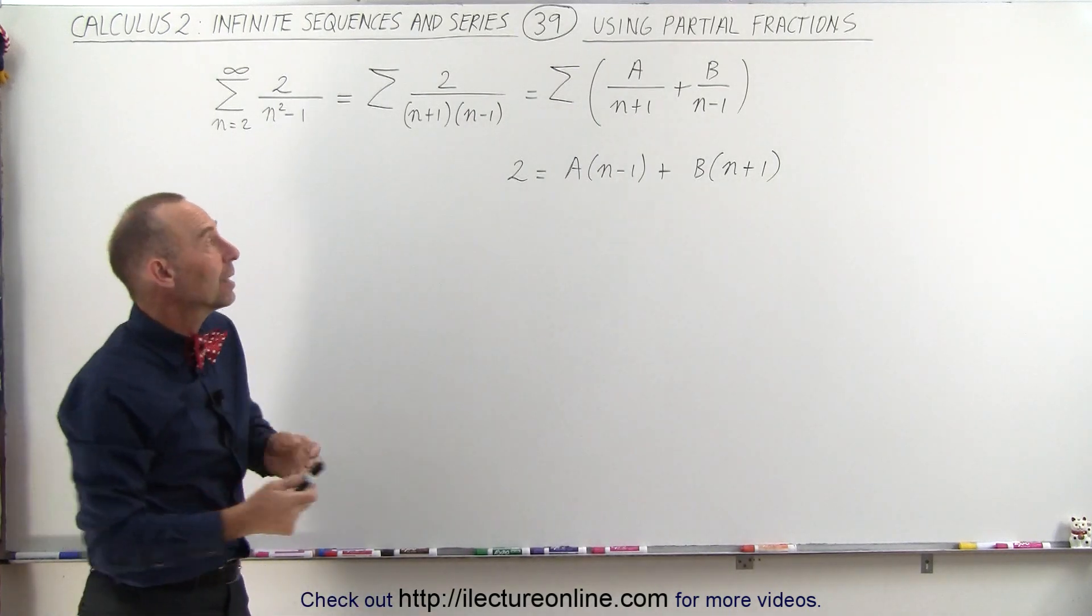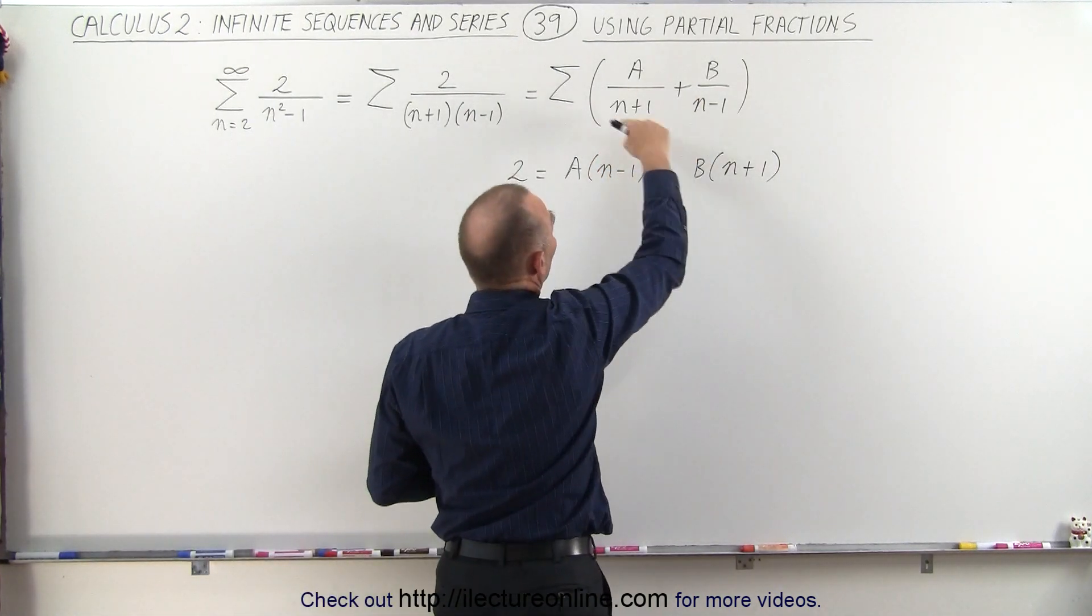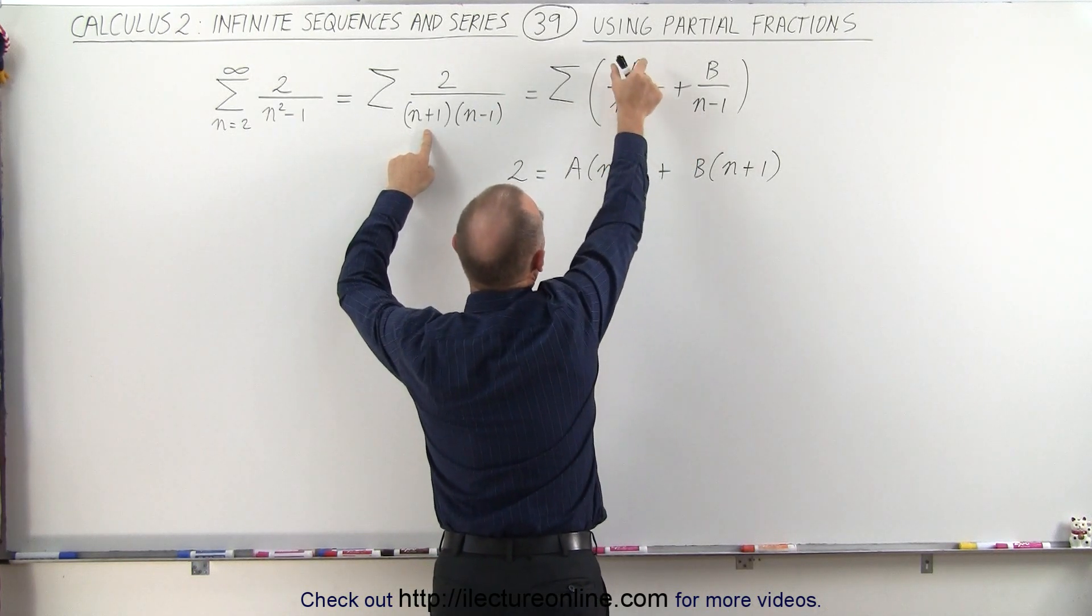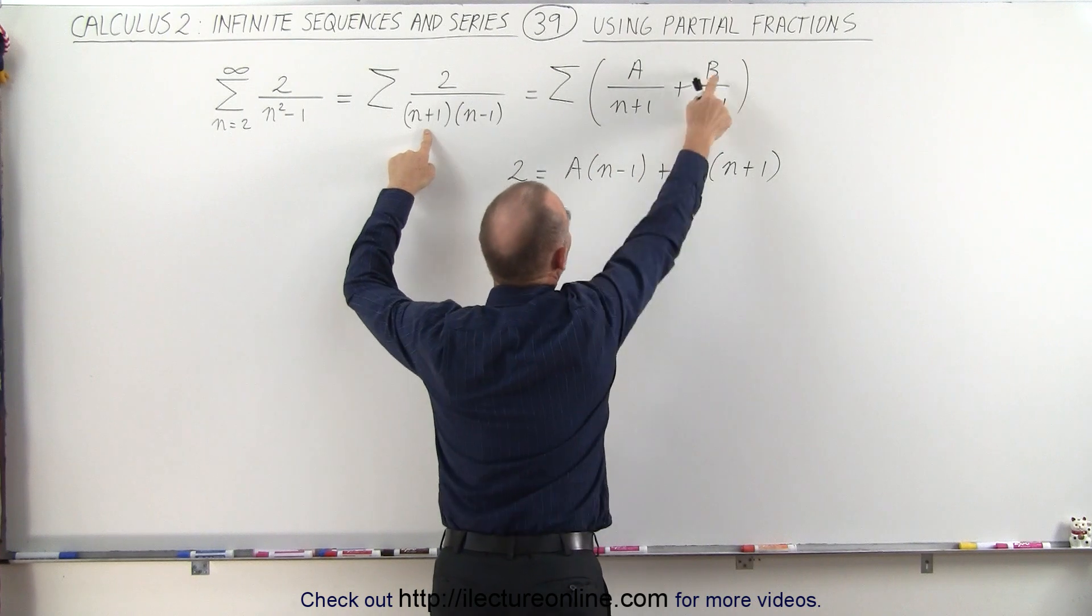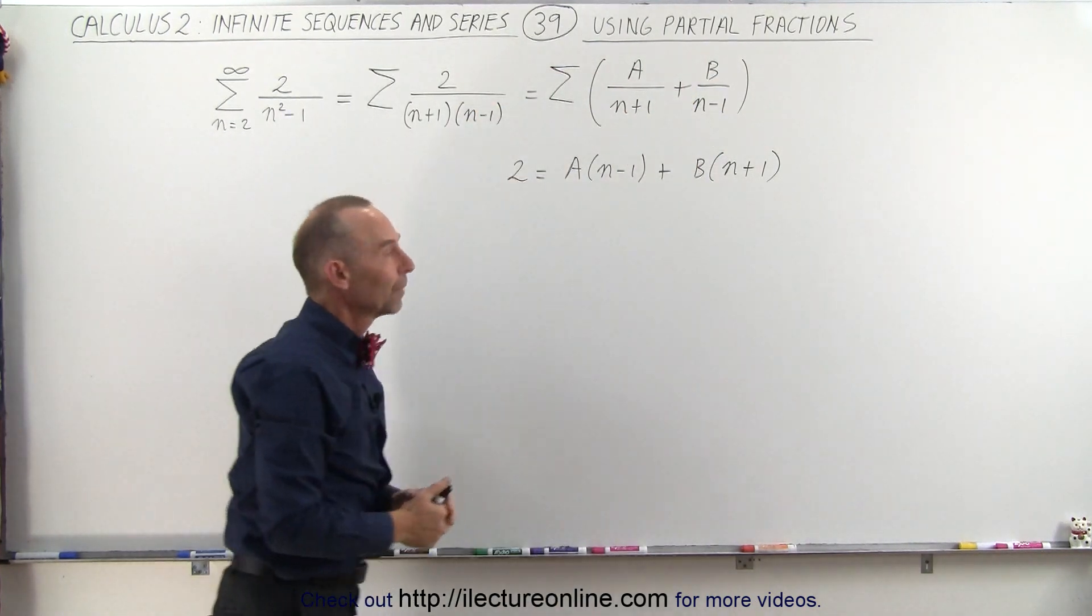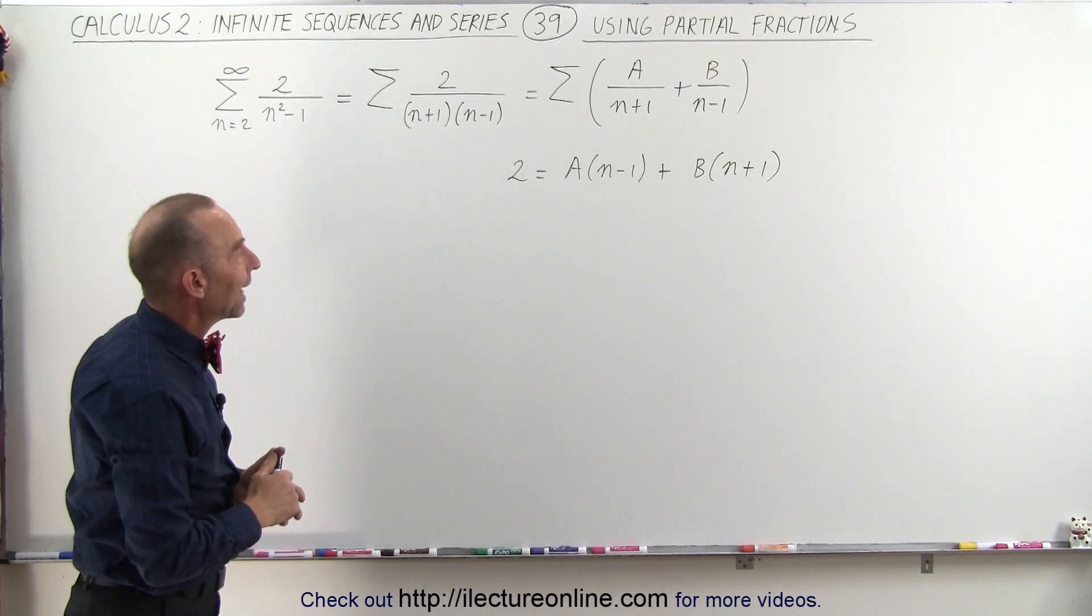What we're actually doing here is we're writing this over a common denominator of n plus 1 times n minus 1, which means that a times n minus 1 plus b times n plus 1 has to equal the numerator of that. Now, we can solve this for a and b.